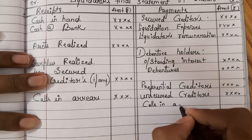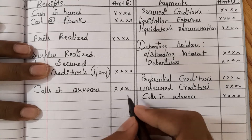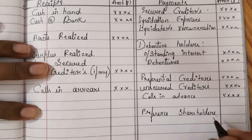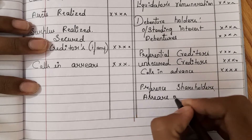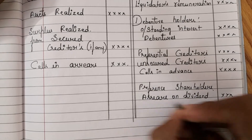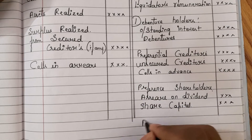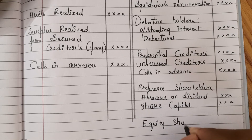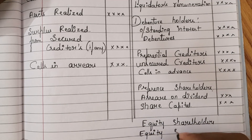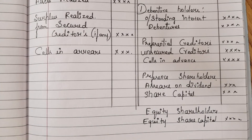Next, if there are any calls in advance — if we collected a final call amount before it was due, we need to pay it back. Next come preference shareholders: first we have to pay any arrears on dividend, then we give them their share capital — whatever amount they should have received as of that day. Finally come equity shareholders — whatever amount remains after distributing all of the above goes to the equity shareholders under equity share capital. This is the format of preparing the Liquidator's Final Statement of Account.